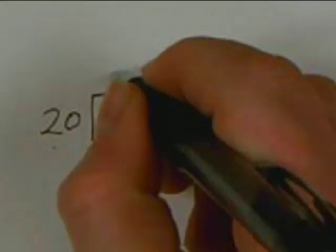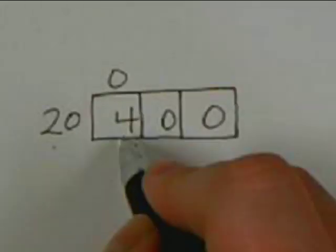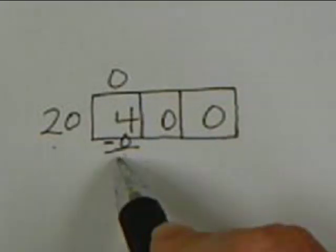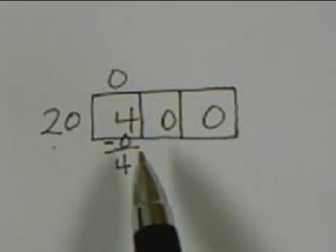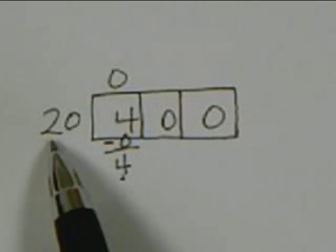So they put a zero at the top, and then they multiply. Zero times 20 is zero. So they put a zero at the bottom and subtract. Four minus zero is four. Now once they've subtracted, I want them to check the bottom number and make sure that this number is smaller than the divisor. And in this case it is, so we're good to move the four to the next box.